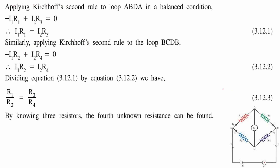Applying Kirchhoff's loop rule to loop ABD gives I1·R1 = I2·R3, and to loop BCD gives I1·R2 = I2·R4. Dividing these equations gives the balance condition: R1/R2 = R3/R4. Knowing any three resistors allows the fourth unknown to be found.